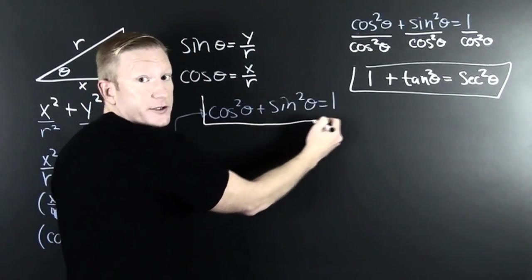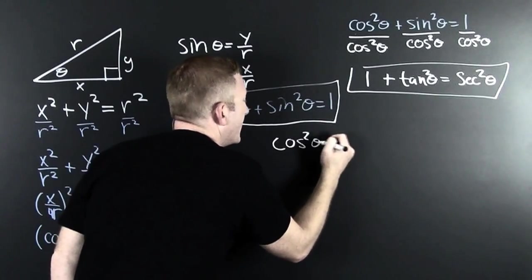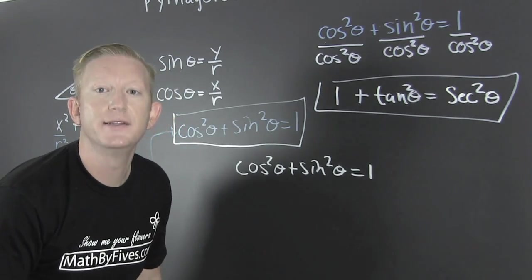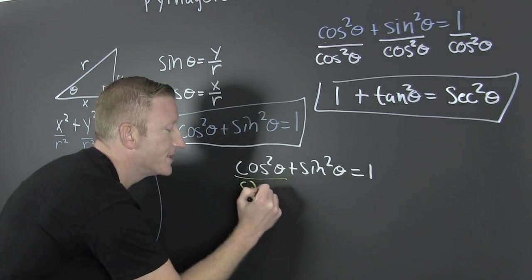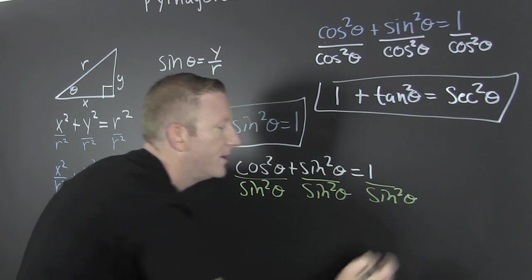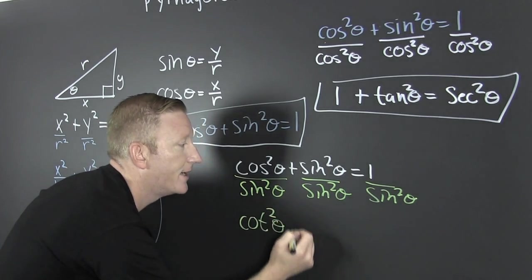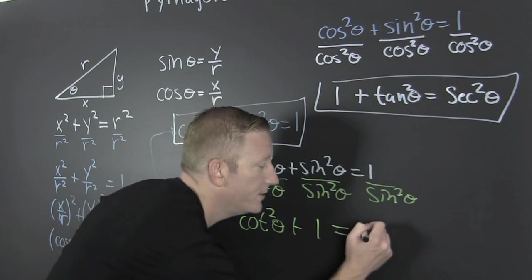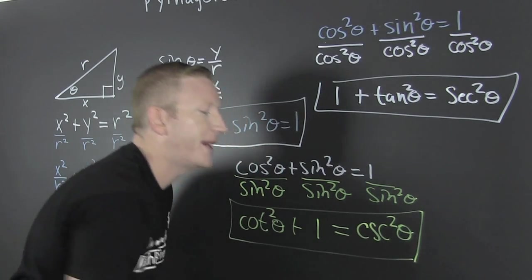Going back to cos²θ + sin²θ = 1, this time I'm going to divide everything by sin²θ. Dividing each term by sin²θ: cosine over sine is cotangent, so cot²θ, plus sin²θ/sin²θ is 1, equals 1/sin²θ which is csc²θ. That gives us cot²θ + 1 = csc²θ — the third Pythagorean identity.